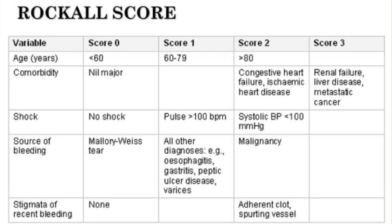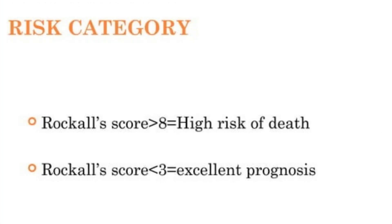How will we assess severity of upper GI bleeding? We will use a scoring system called the Rockall score. This scoring system has five parameters: age, comorbidity, shock, source of bleeding, and stigmata of recent bleeding. A total score of more than 8 indicates high risk of death. A total score of less than 3 indicates excellent prognosis.